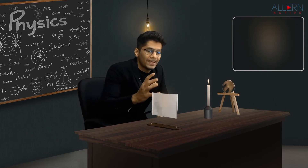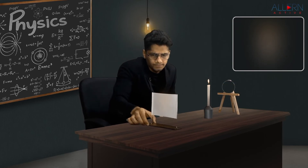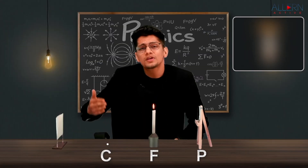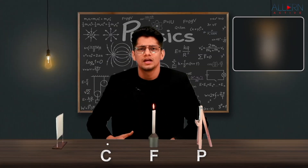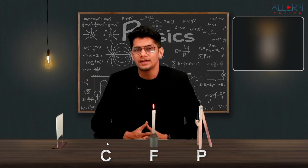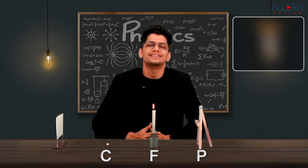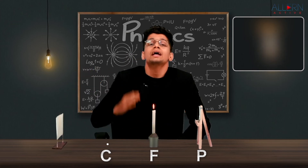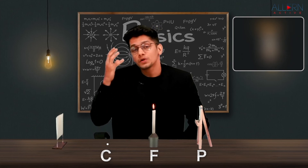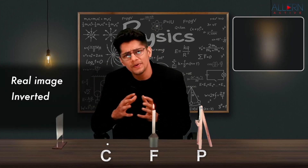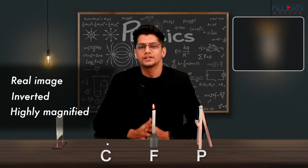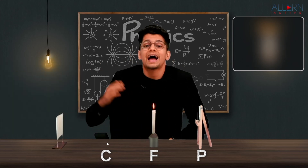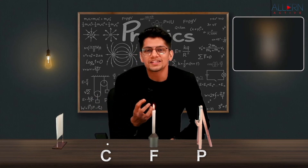Now we place the object at the focus. We cannot obtain a sharp image no matter how far we move the screen — that means the image is formed at infinity. So when the object is at the focus, the image is at infinity: real, inverted, and highly magnified. The conclusion is that as we move the object closer to the mirror, the image moves farther away and the size keeps increasing.